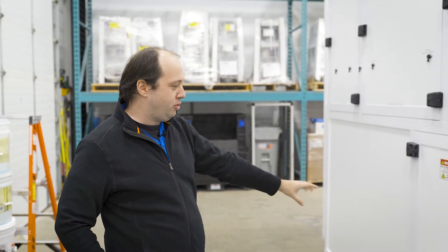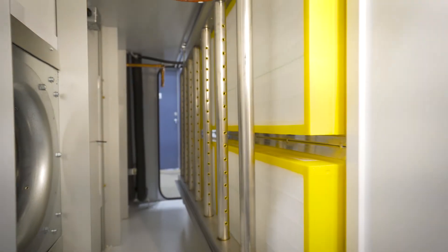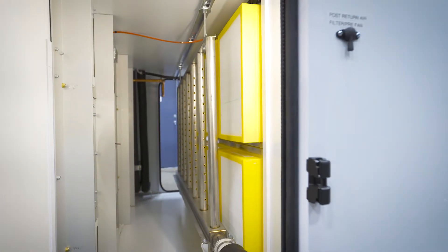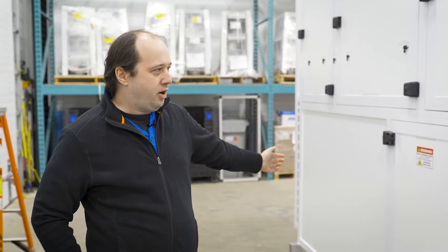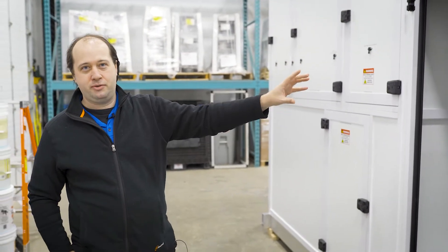And then down below we're bringing in return air from below using the humidifier to add some humidity if it's required. And then all of that gets mixed together here in the mixing section before it gets split into the three zones.